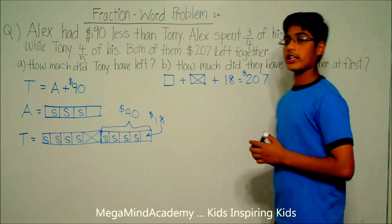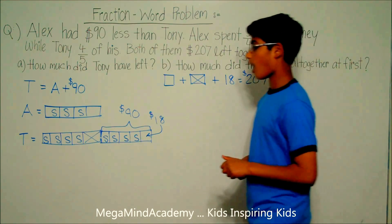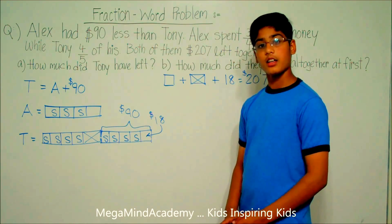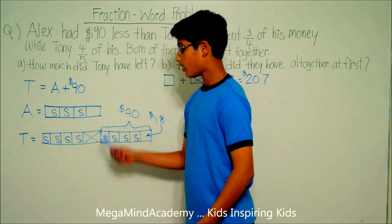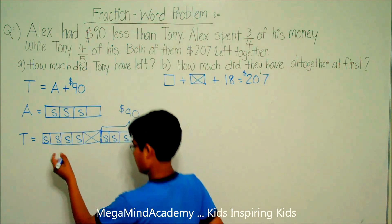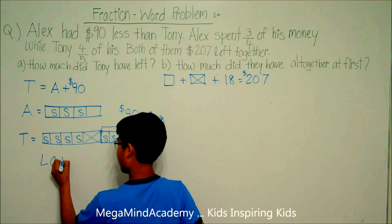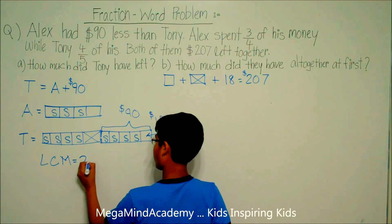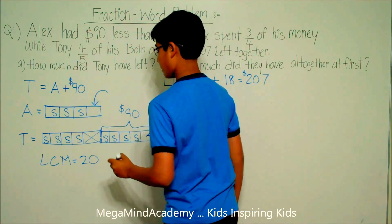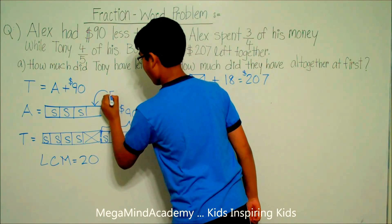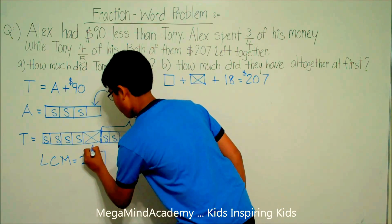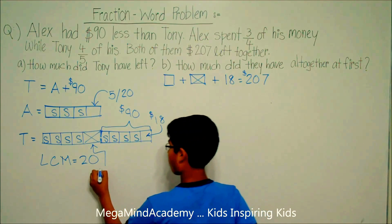To solve the next part of the problem, we need to have a common unit between Alex and Tony. So let's find the lowest common multiple of 4 and 5. The LCM of 4 and 5 is equal to 20. So this means that Alex's unit is equal to 5/20ths, and Tony's unit is equal to 4/20ths.